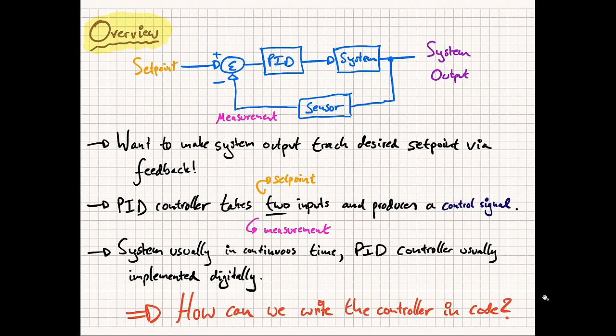The question is how we can write the PID controller as an algorithm that can run in software. Before we start with the derivation, I expect you to be familiar with Laplace and Z transforms and will not be covering these topics here for the sake of time. There are many resources on- and offline, so I recommend a quick search on the S or Z domain and Z transforms or Laplace transforms. If you aren't familiar with these topics, that's no problem at all — the important part of this video is the actual implementation code, so feel free to skip ahead.